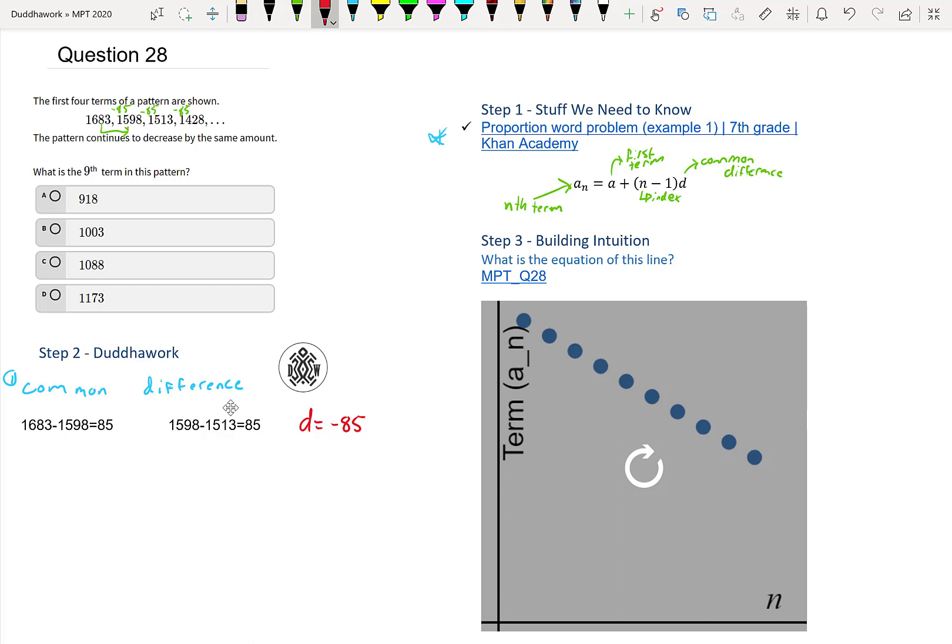So now that we have this, we can do step two. So I'll write formula. And here it would be A_N is equal to A, which is 1683, plus N minus 1, times the difference, which is negative 85.